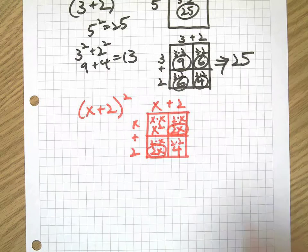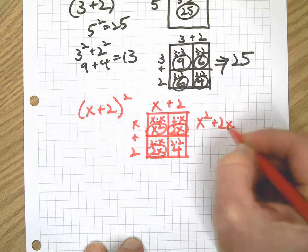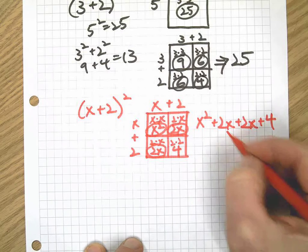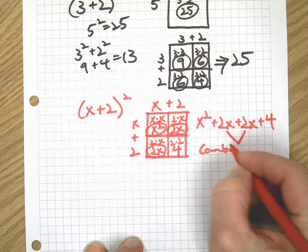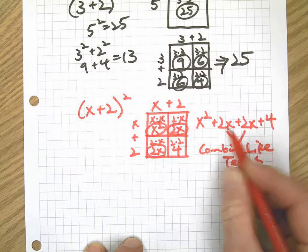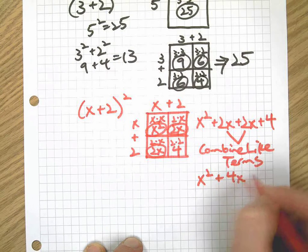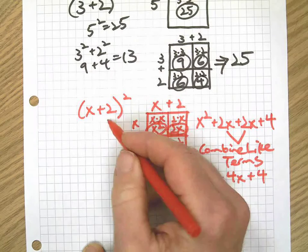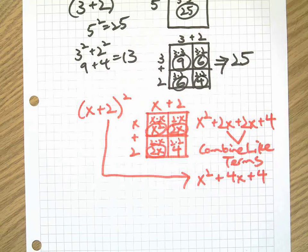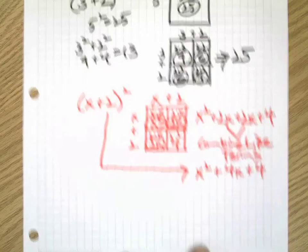Now we add all those things together: x squared plus 2x plus 2x plus 4. And then we're going to combine like terms, meaning we're going to put those with the same variables together: x squared plus 4x plus 4 is what that equals.